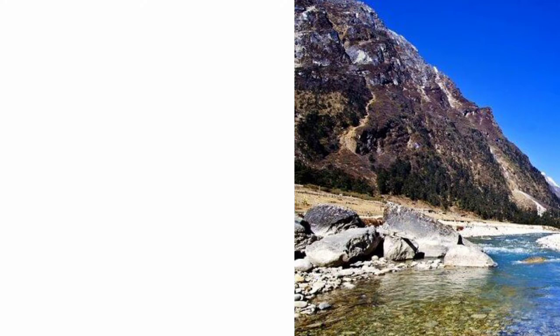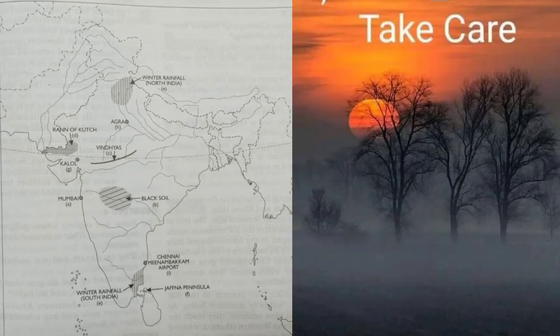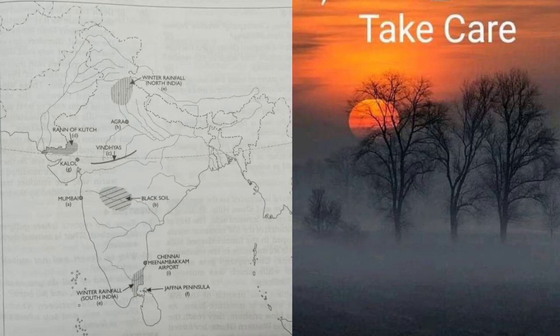Next map — very important outline map: mark and name the capital of Maharashtra — that is Mumbai. Mark a region of black soil in India. Mark the Vindhya Mountains and the Rann of Kutch.